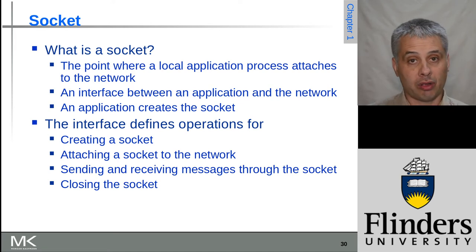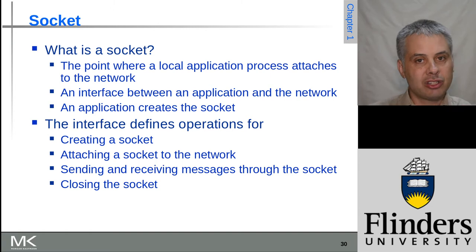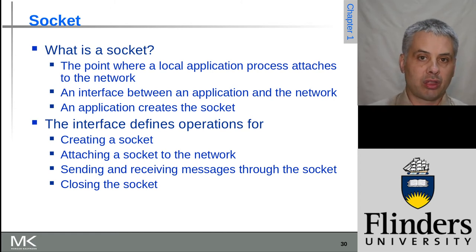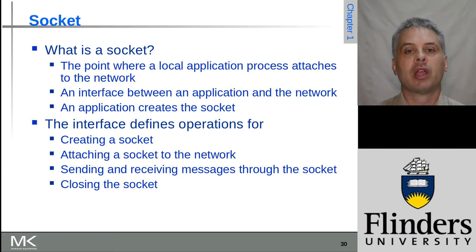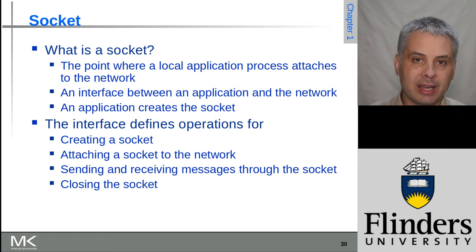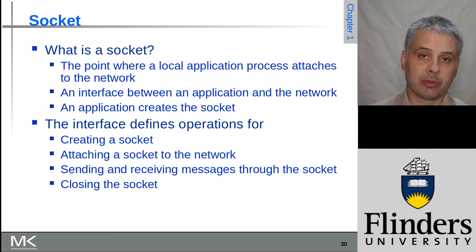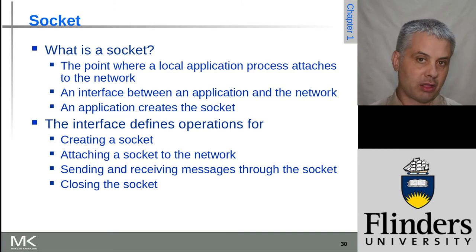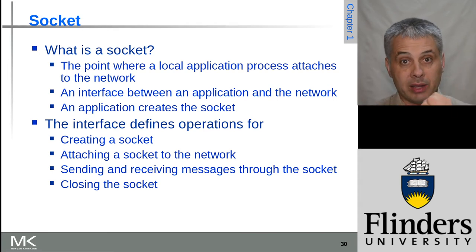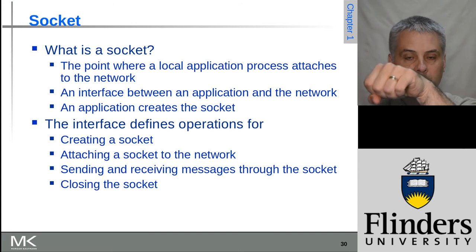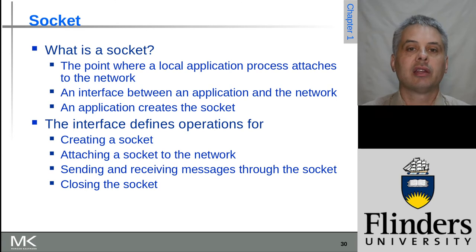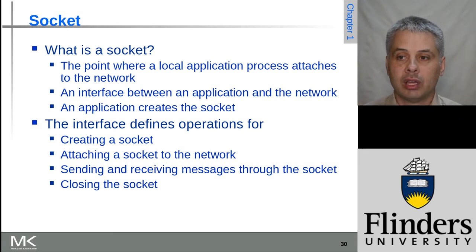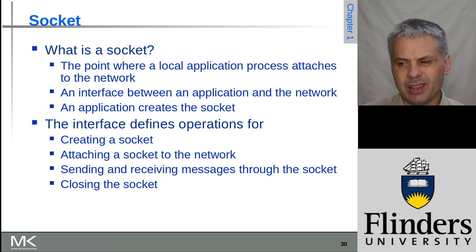In the network sense, a network socket works much the same way — an application can plug into something it wants to communicate with in order to do some useful task. This abstracts away the underlying network, providing a very simple interface regardless of what the underlying network actually is. The interface has mechanisms for creating sockets, plugging into the network, sending data in one or both directions, and finally unplugging and destroying the socket at the end.